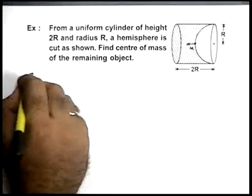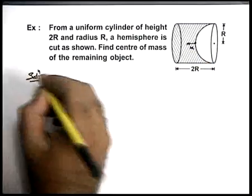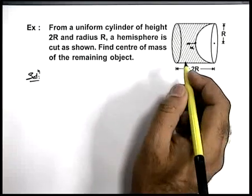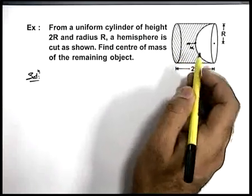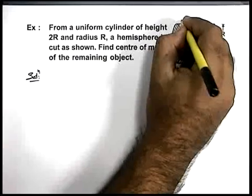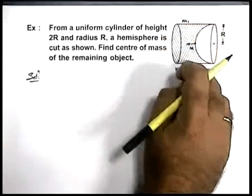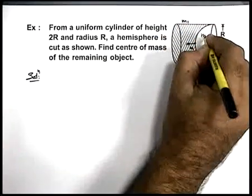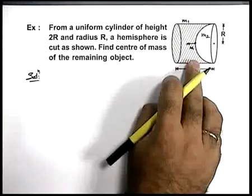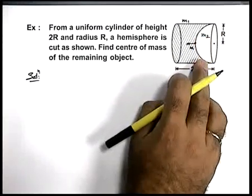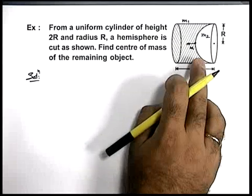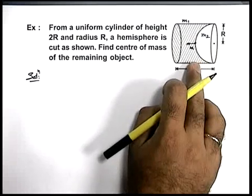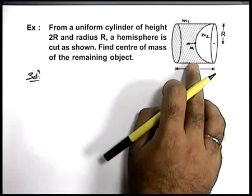In this situation, the very first thing we will do is find out the masses of the two parts of this object. One is m1, which is the remaining object, and m2 is the hemisphere which is being cut. Now, as the object is uniformly dense, we can state that these masses will be proportional to the volumes.